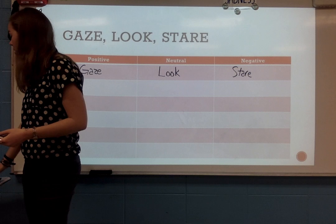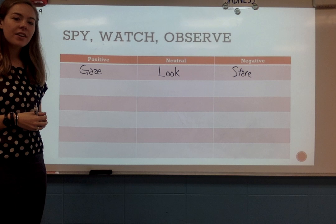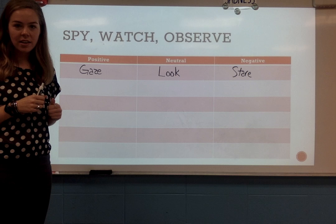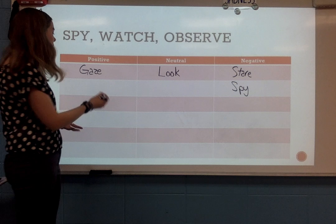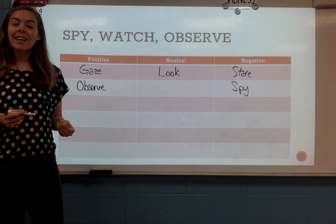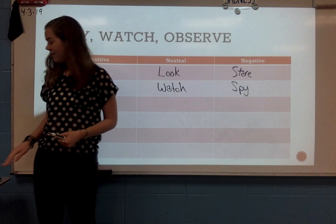What about these words: spy, watch, observe. Which one would be the most negative to say about somebody? I'm going to go with spy — that makes me think they're sneaky. A positive way to say that would be observe: maybe they're noticing details, or they're paying close attention as they're observing something. The more neutral way to say that would just be to say they're watching.